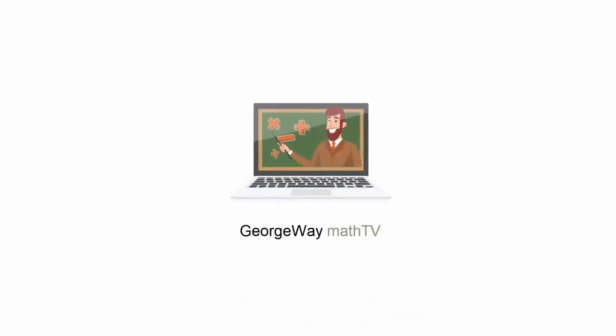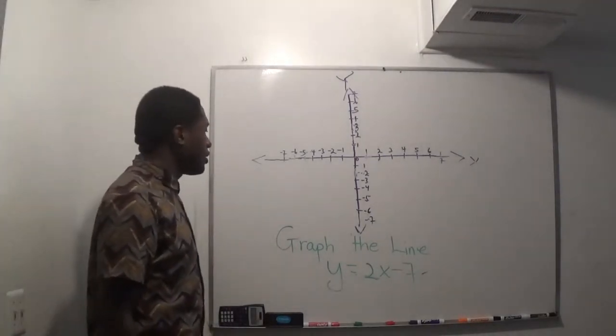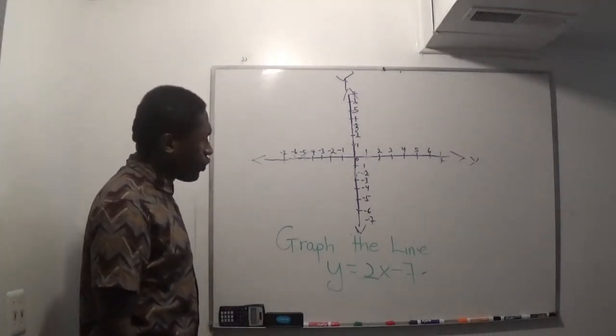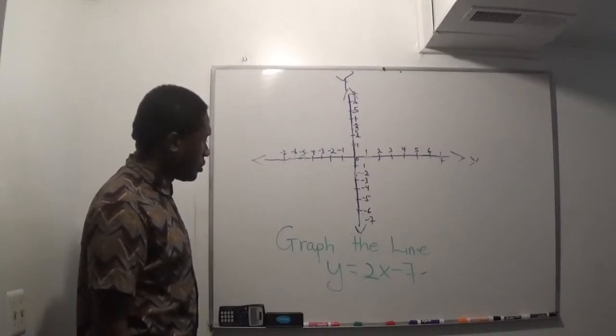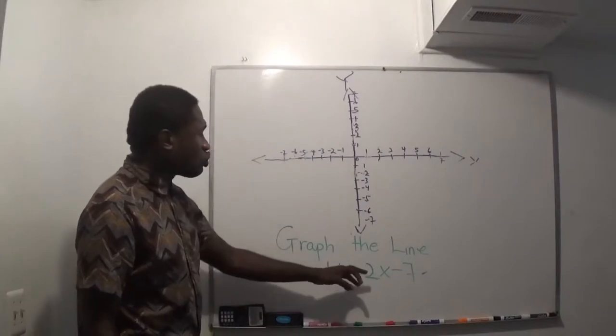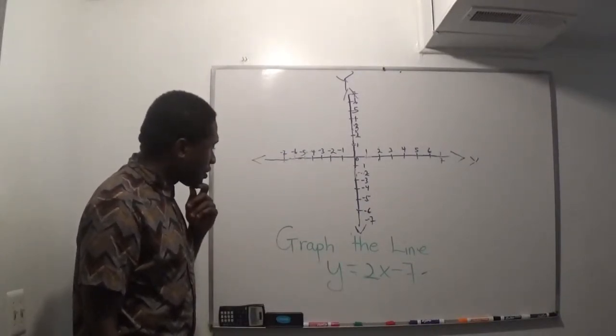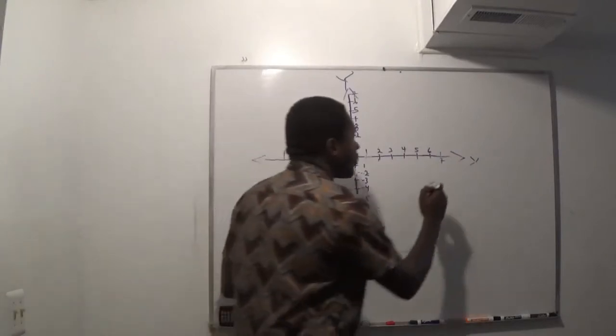Welcome to Georgia Math TV. Okay, so I'm being given this question right here: Graph the line y equals 2x minus 7. First, I have to make sure it's in the equation of a line form, which is y equals mx plus b.